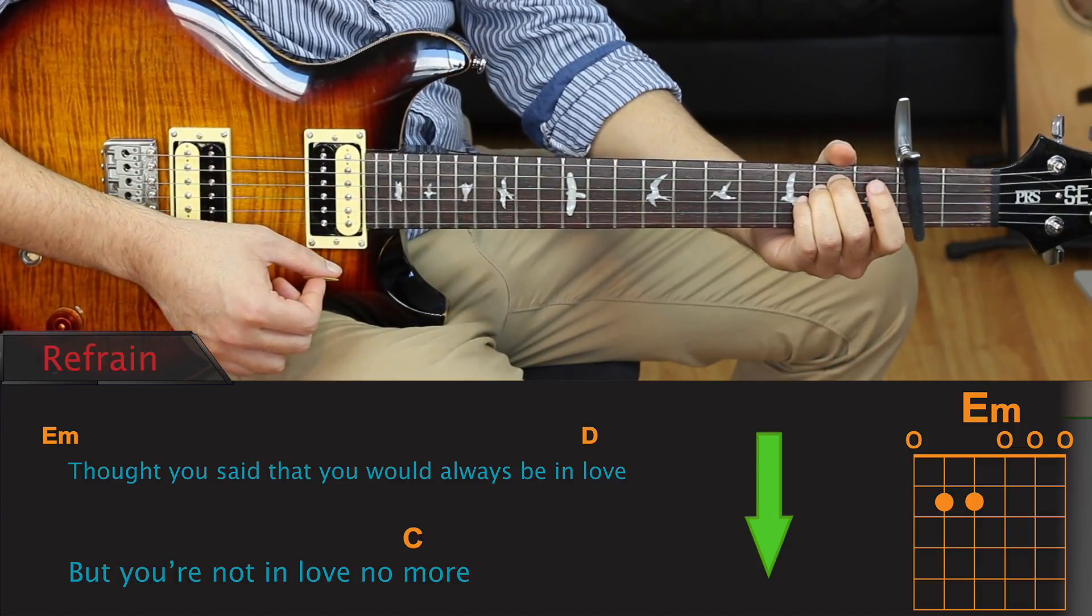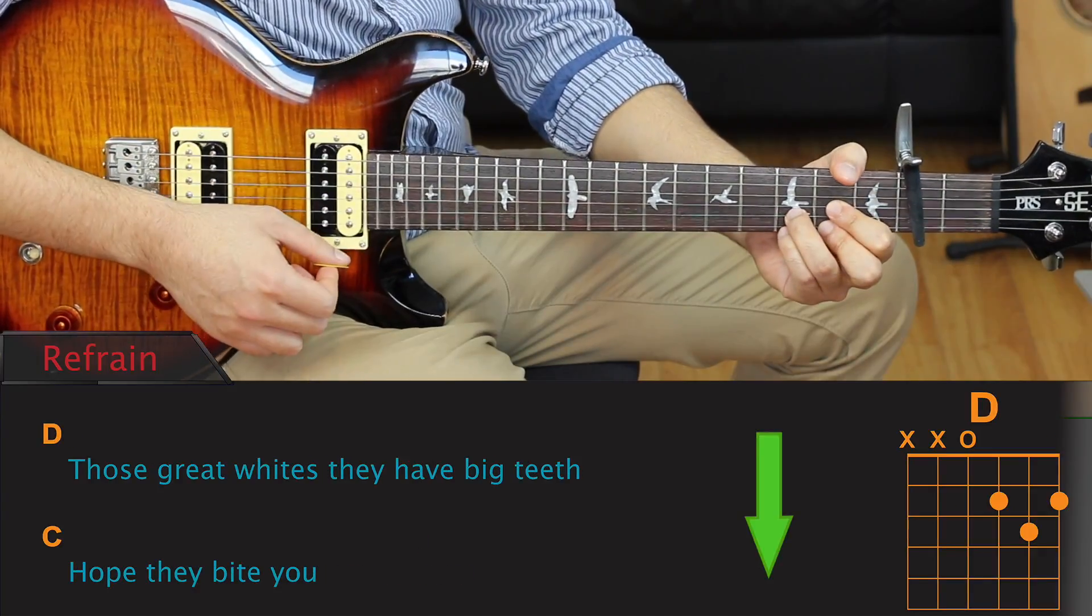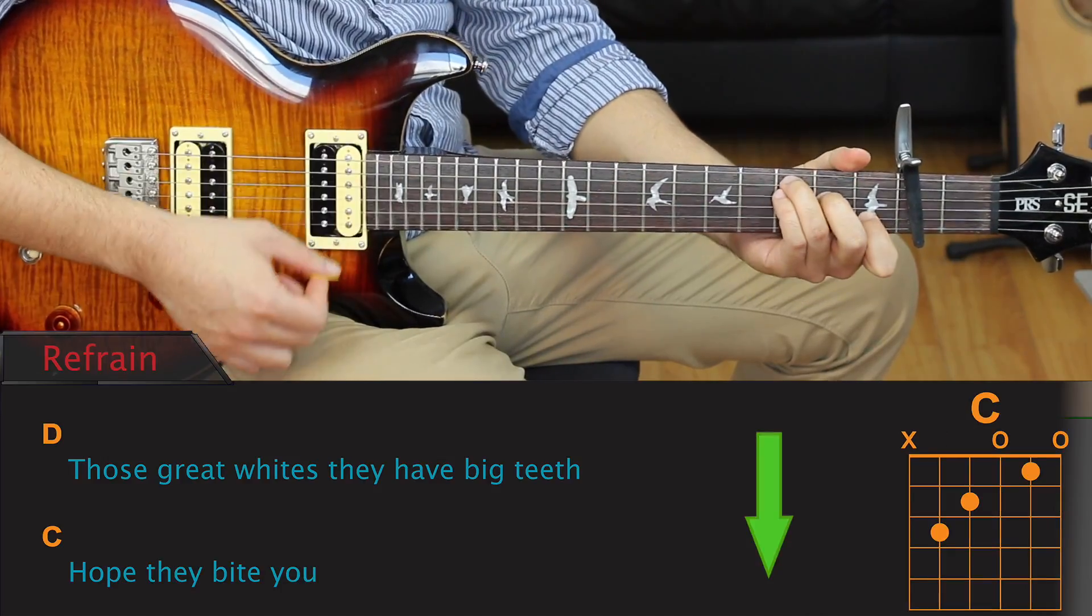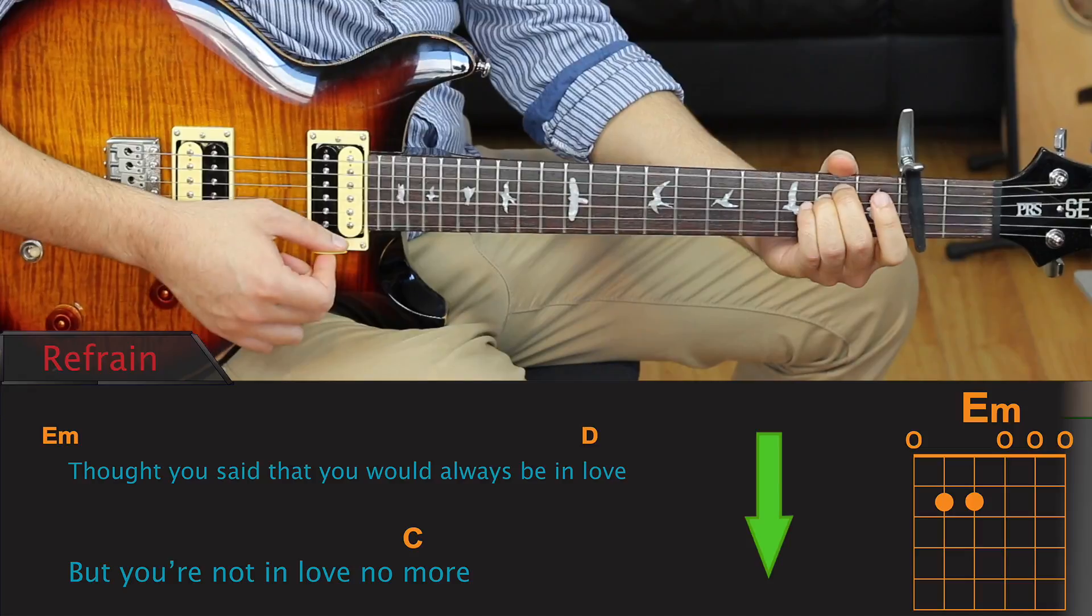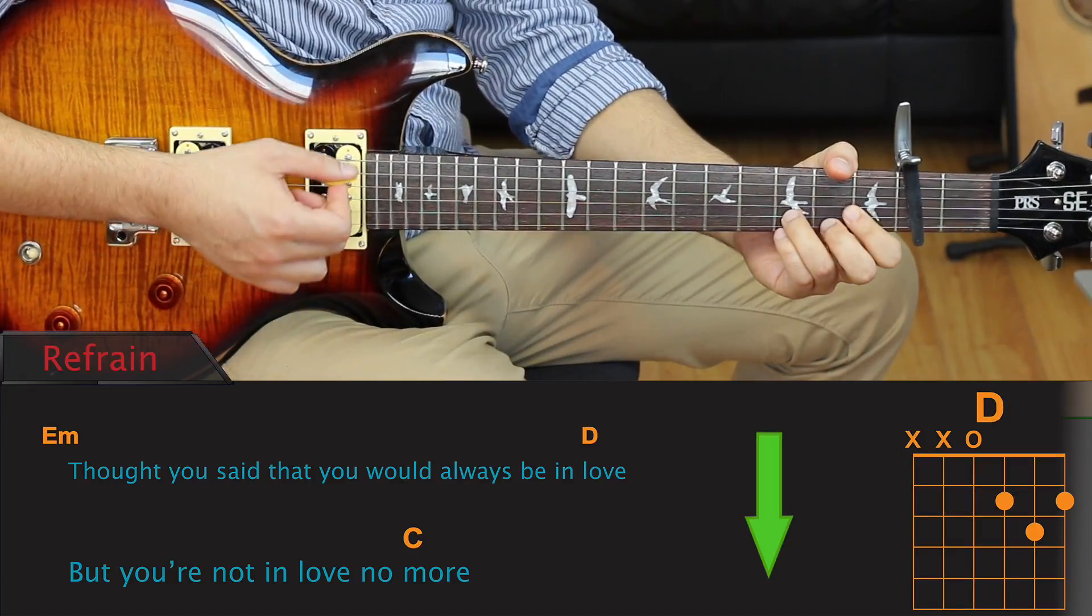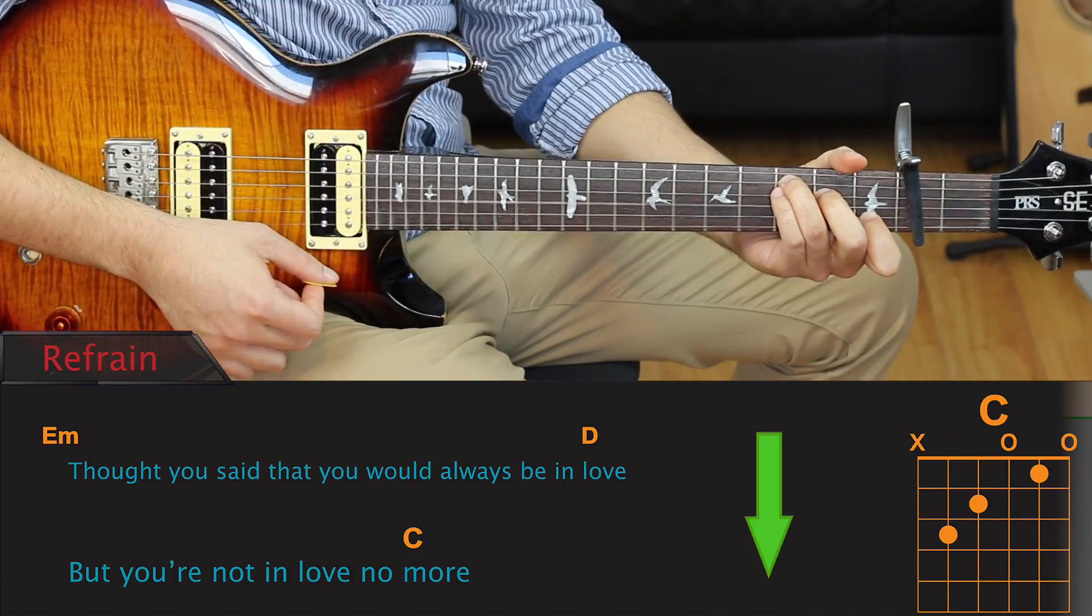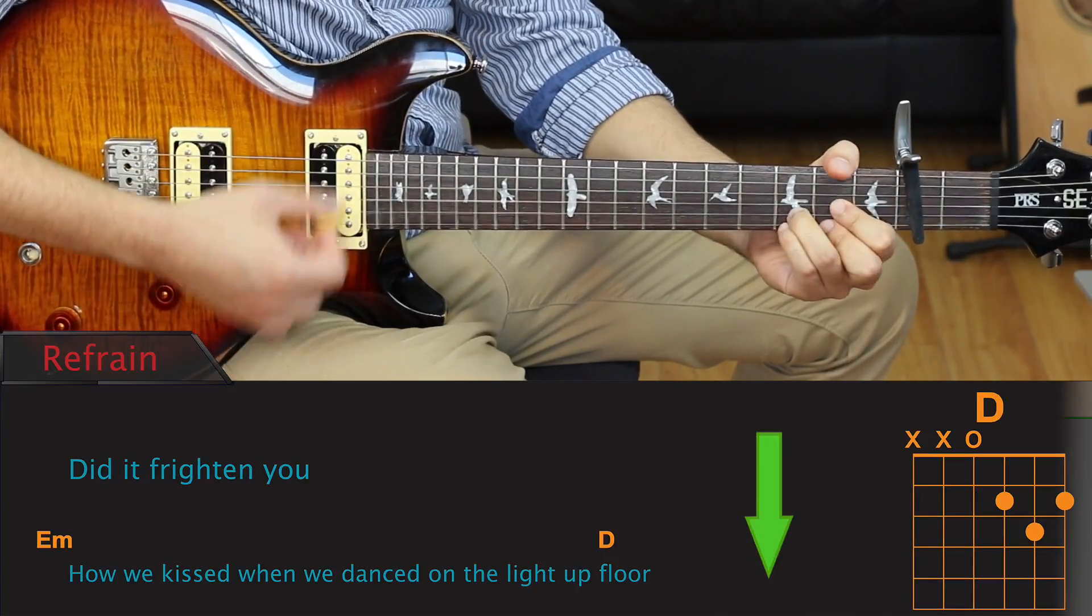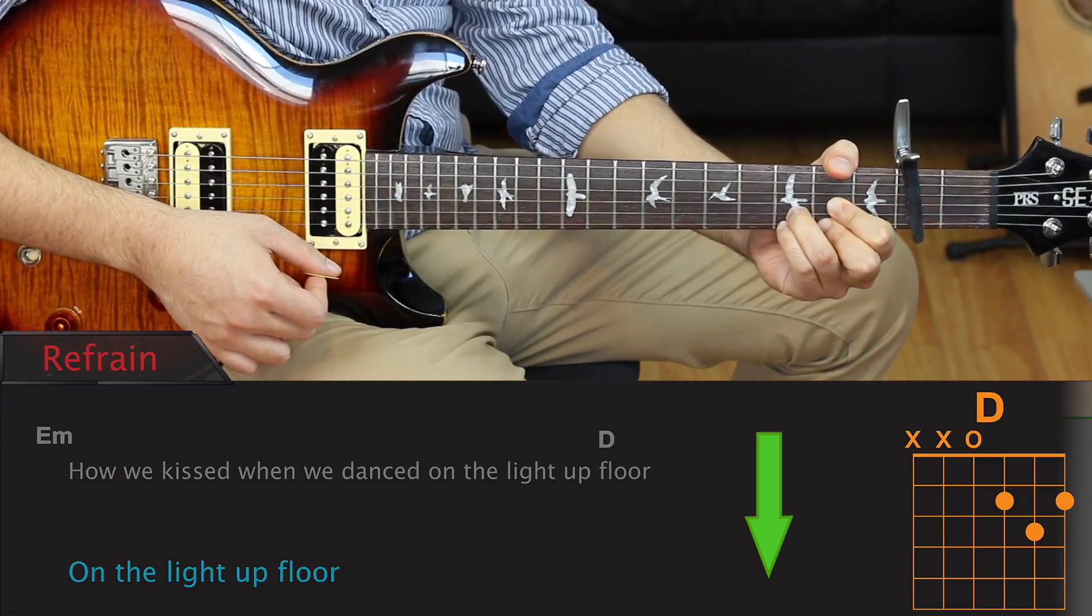Alright, let's try that out with some lyrics. Those great whites, they have big teeth, hope they bite you. Thought you said that you'd always be in love, but you're not in love no more. Did it frighten you? How we kiss when we dance on the light up floor, on the light up floor.